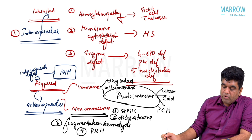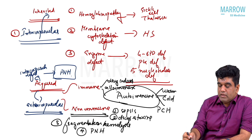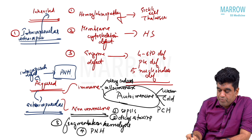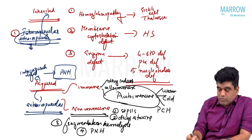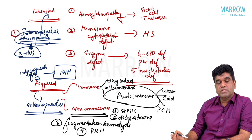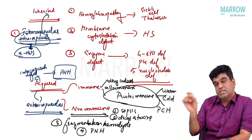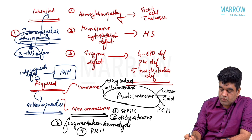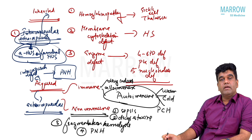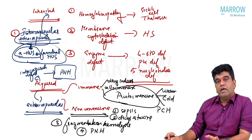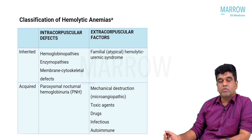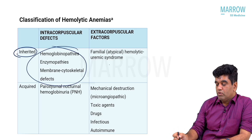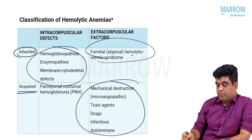Similarly, all inherited causes are intracorpuscular with one exception — there is one inherited cause which is extracorpuscular: atypical HUS (also called familial HUS), which comes under fragmentation hemolysis. One form of HUS is actually inherited due to a complement effect. So familial HUS is the only inherited condition with an extracorpuscular cause, and PNH is the only acquired condition with an intracorpuscular defect. This is from a specific table in Harrison.